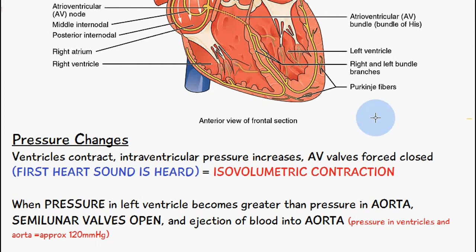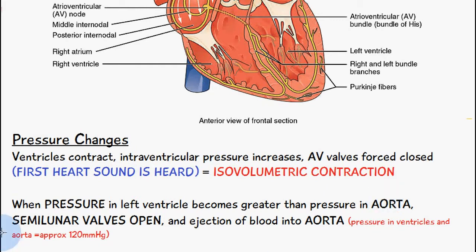We're going to talk about the left ventricle first. The left ventricle leads to the aorta and we have semilunar valves in between. So when the pressure in the left ventricle becomes greater than the pressure in the aorta, that is the key threshold.